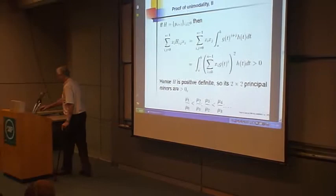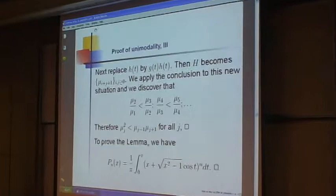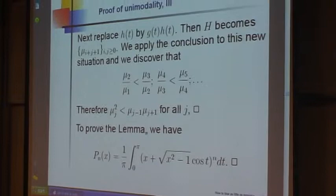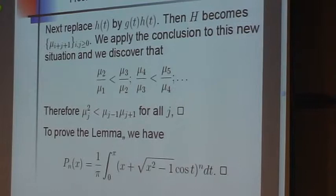Replace h of t by g of t h of t. And then H becomes the matrix mu sub i plus j plus 1. And apply the conclusions of that one. And we discovered that all the missing inequalities are also true. And if you put the two of them together you get the whole chain of increasing inequalities that we need.